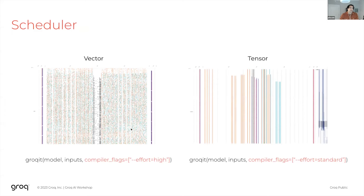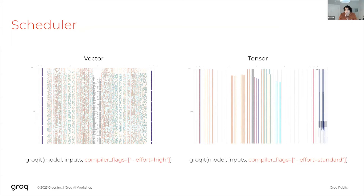Here we have a Grok View snapshot — a snapshot in time where colors indicate where on the chip the constants currently are and where data in transit currently is. On the left, vector scheduling looks a lot like abstract art because we're scheduling vectors individually and using random addressing to minimize stream conflicts. On the right, tensor scheduling retains a lot more regularity, which enables better instruction compression.